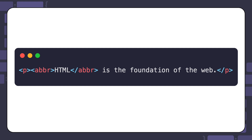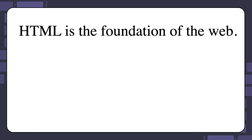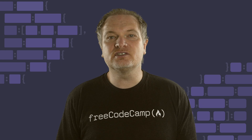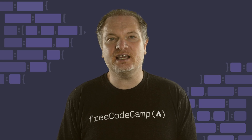Here's an example where you can see a paragraph with the sentence 'HTML is the foundation of the web.' The acronym HTML is within an abbreviation element. This is what you would see in the browser — nothing has really changed. It still looks like normal text. The abbreviation element is providing helpful context behind the scenes, but users will still see the acronym as normal text.